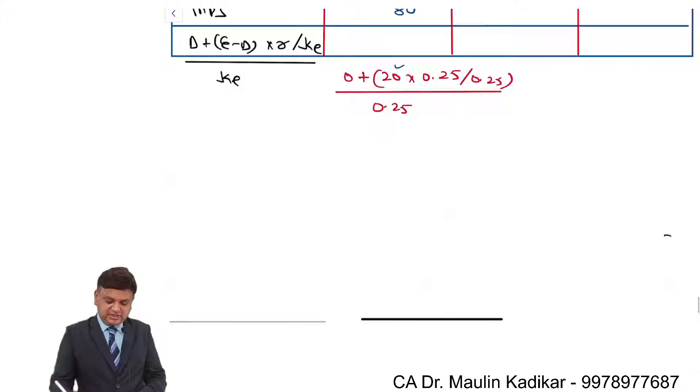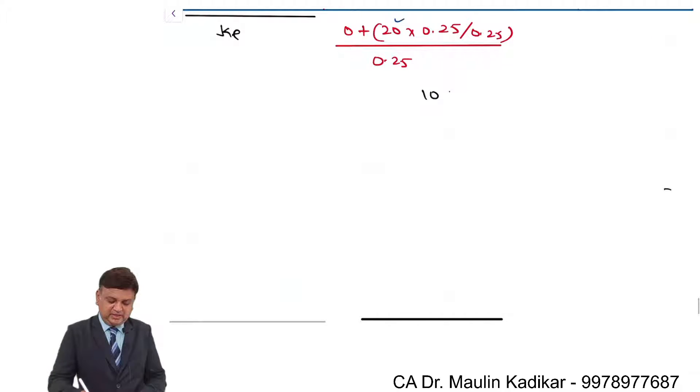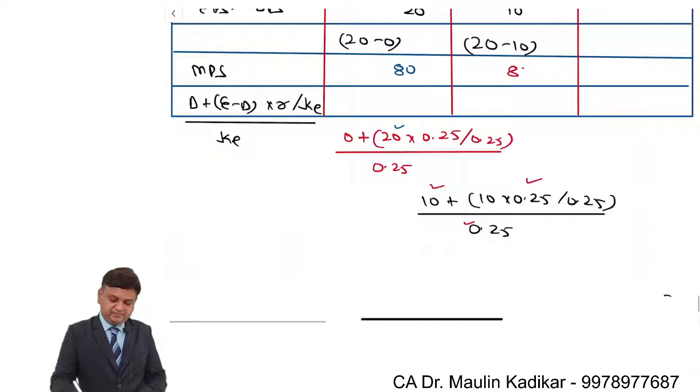Finally, the market price of the share in which the dividend portion is 10 plus 10 into 0.25 divided by 0.25 whole divided by 0.25. What will happen? This value is going to remain 10 plus 10, that is 20 divided by 0.25, that comes to 80. That is the way the price is calculated.